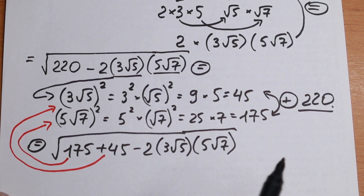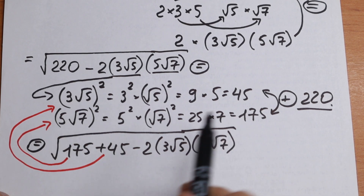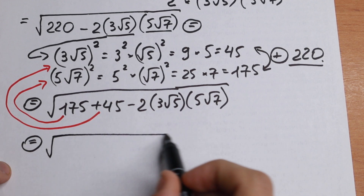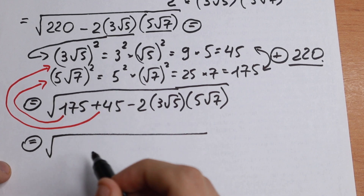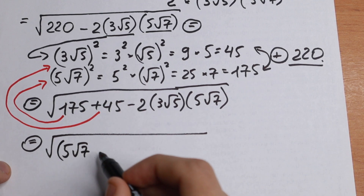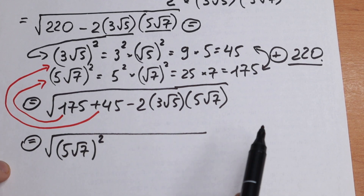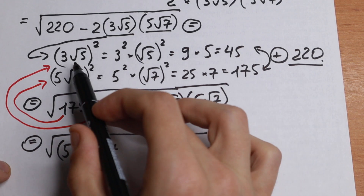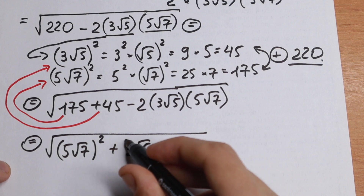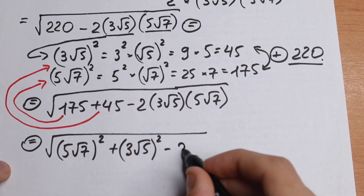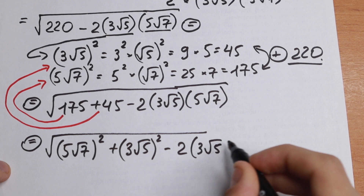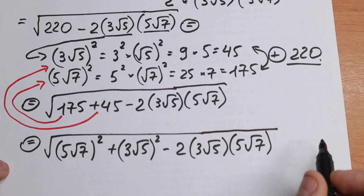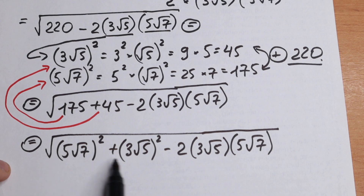We now have the square root of: (5√7)² plus (3√5)² minus 2 times (3√5) times (5√7). We just replaced 175 with (5√7)² and 45 with (3√5)². I hope you understand this step, because if we add these squares we get 220. But now we need this expression in its new form.